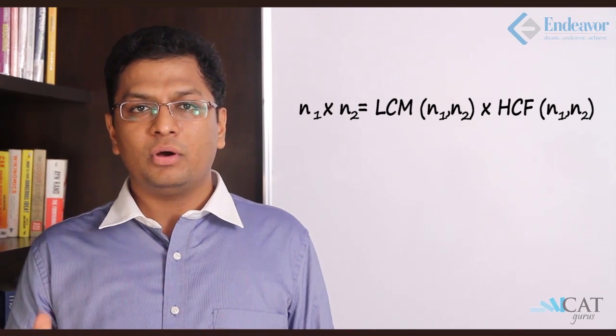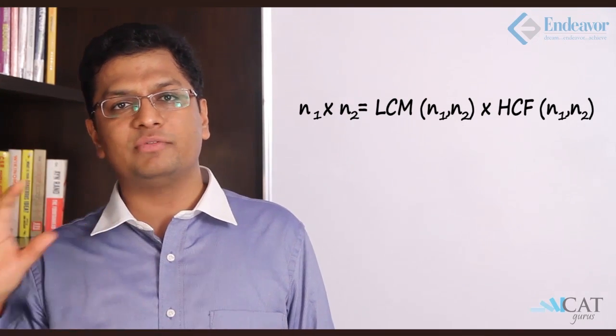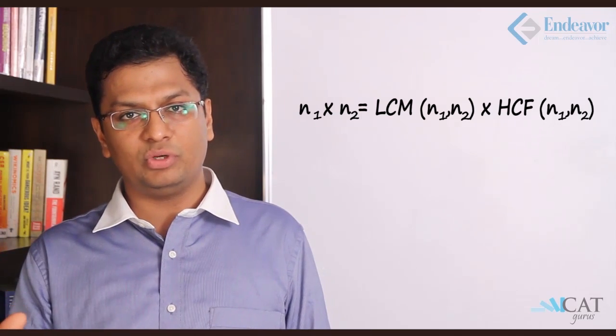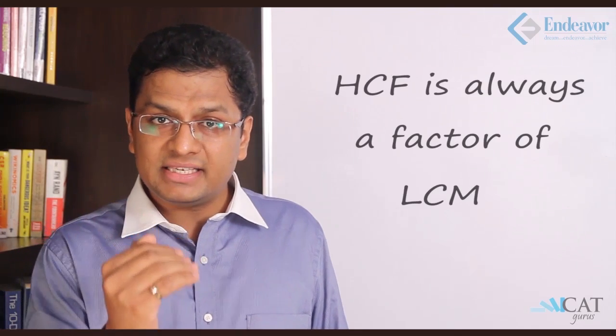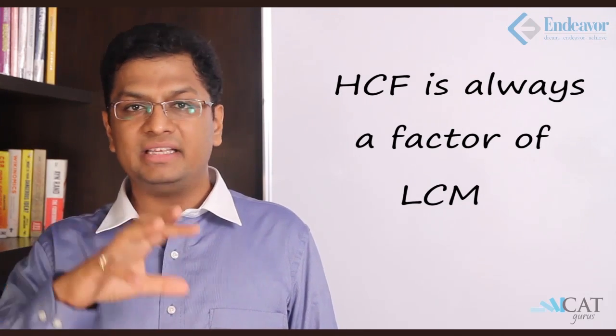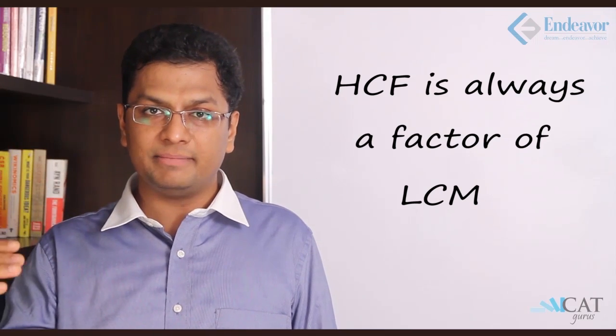Let's look at some properties of these. So if there are two numbers N1 and N2, then the HCF and LCM of the two numbers, the product of the HCF and LCM will be same as the product of the two numbers. So N1 into N2 will be equal to LCM into HCF of those two numbers. Whereas let's look at the second property. The HCF will always be a factor of the LCM of any set of numbers. So HCF is a factor of LCM everywhere.